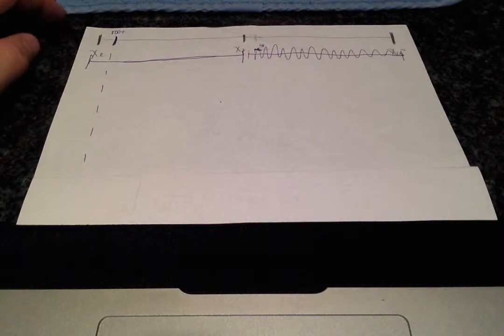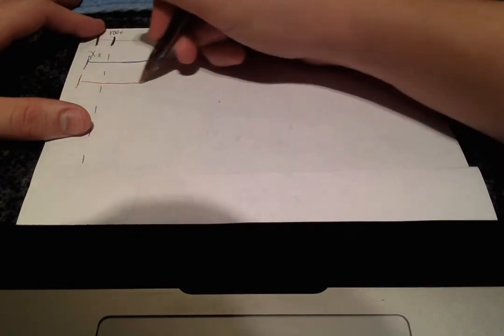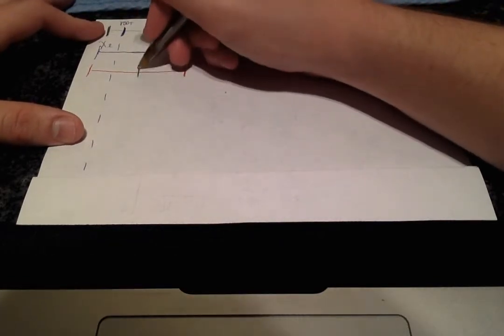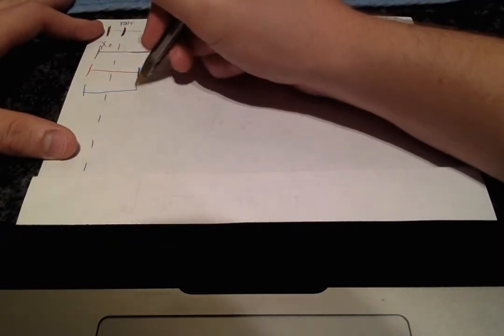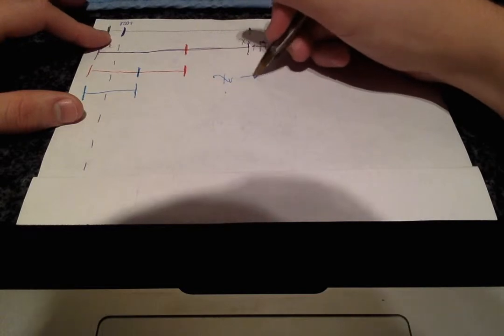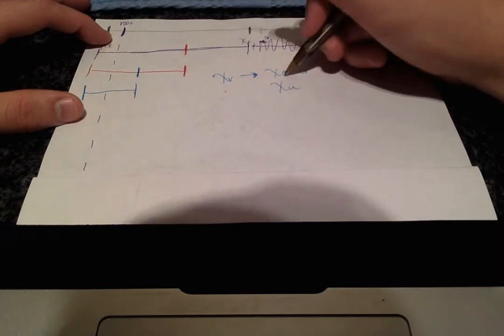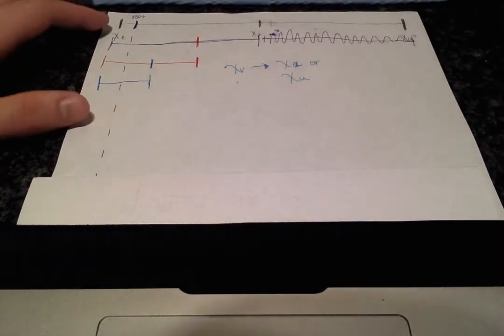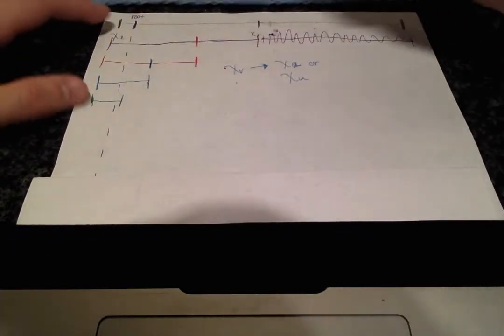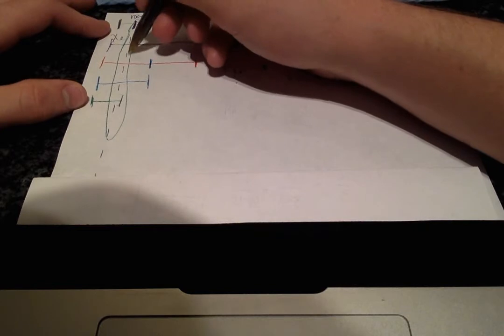And then once again, you'll cut this in half. And this will become your new range. And then once again, you'll cut this in half. And this will become your new range. And each time, your xr value is either going to become the lower limit or the upper limit. And as you can see, with each iteration, your xr value is becoming closer and closer to where that root is actually located.